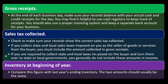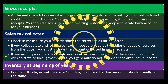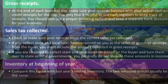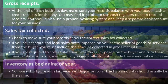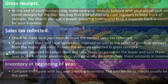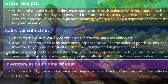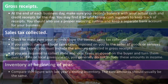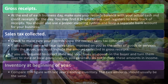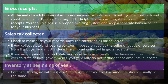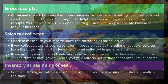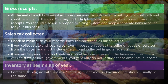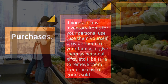Inventory at beginning of year: compare this figure with last year's ending inventory — the two amounts should usually be the same. When reviewing your income statement for red flags, double-check that beginning inventory matches the prior year's ending inventory. If it does not, you need to explain why, or it could be a red flag that the IRS might question.